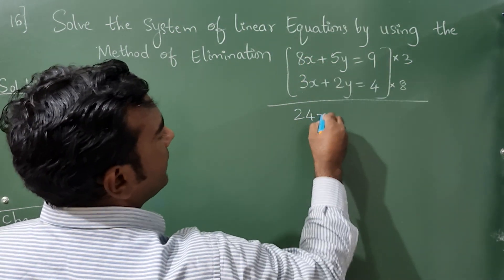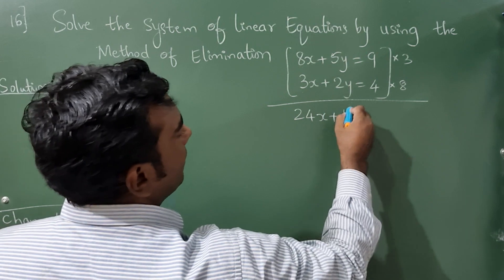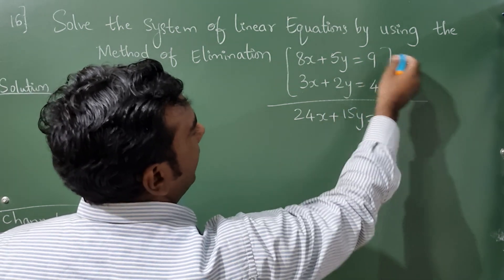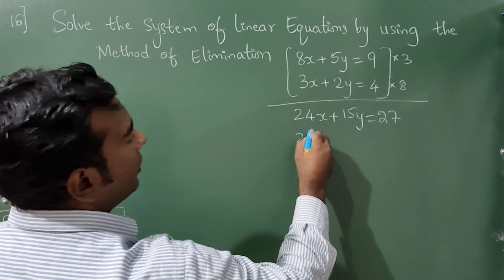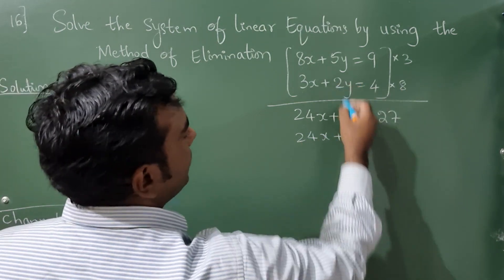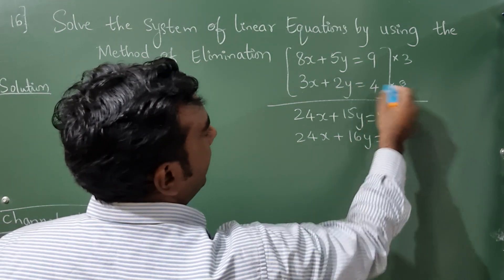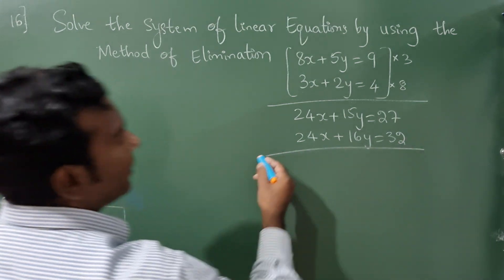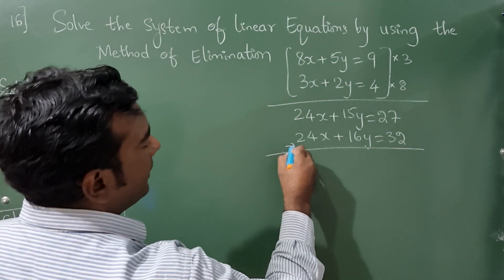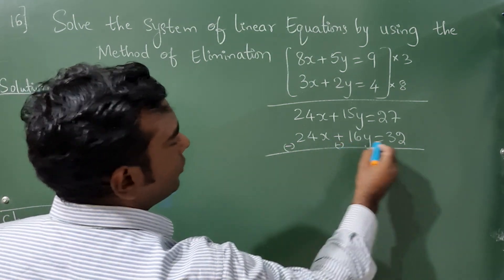8 times 3 is 24x, plus 3 times 5 is 15y, and 9 times 3 is 27. For the second equation: 8 times 3 is 24x, plus 8 times 2 is 16y, and 8 times 4 is 32. Now change the signs to minus for subtraction.